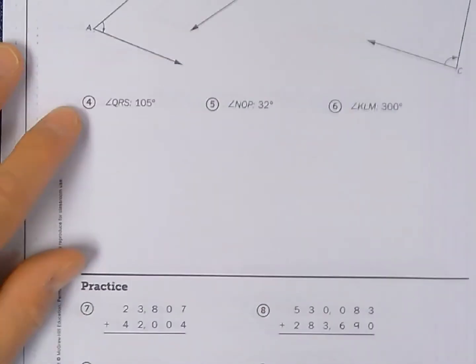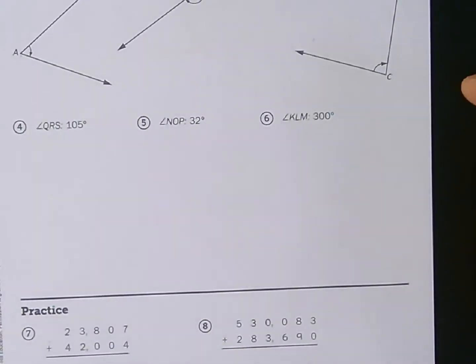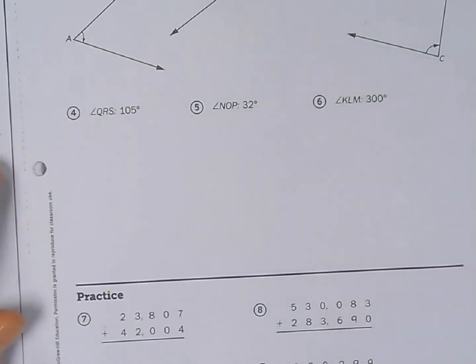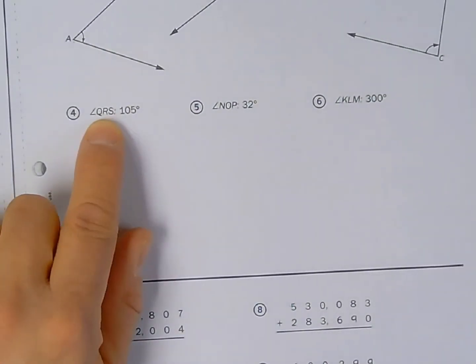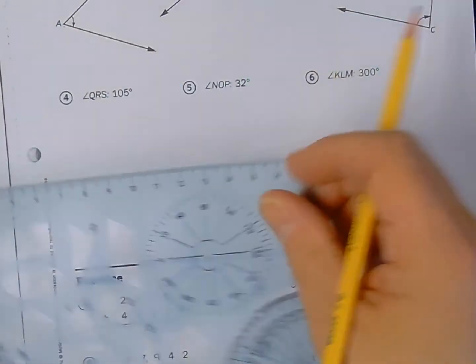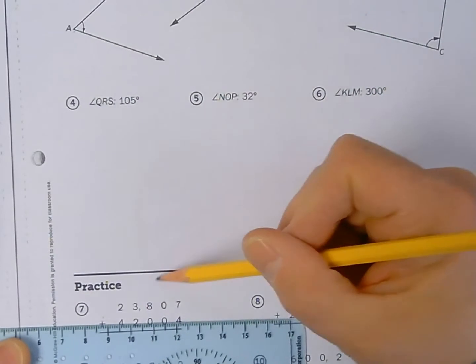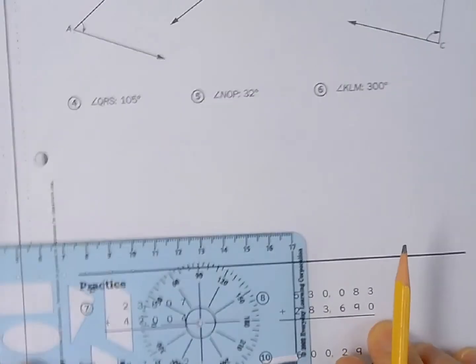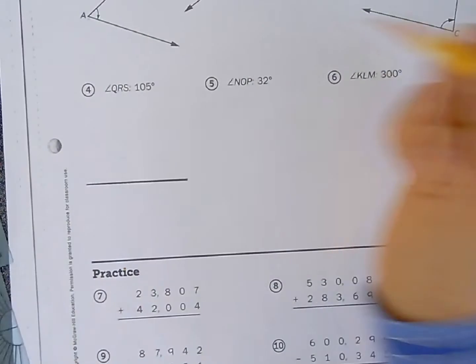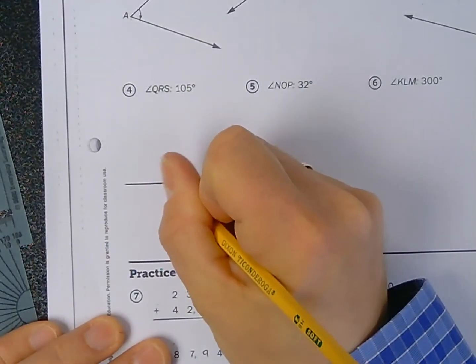So problems four, five, and six don't have any angle for you to measure. They want you to draw it. So I need to draw an angle that is 105 degrees. Well how do I do that? Well to start with I need a base. So I'm going to just make my line parallel to this line that separates us from the practice problems. So I'm going to draw a line like so. And I'm just going to pick a point like I did on my example on the back.